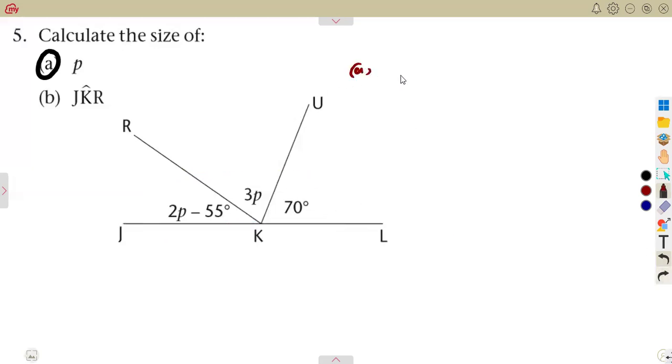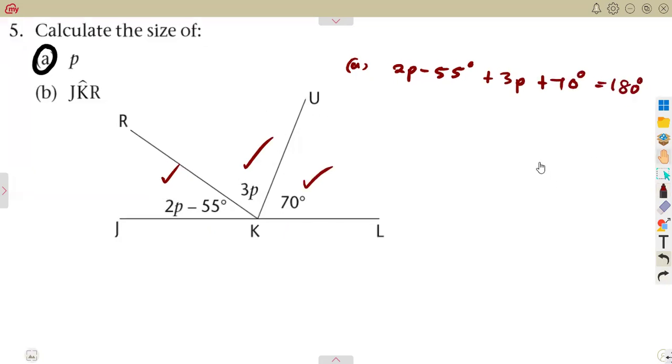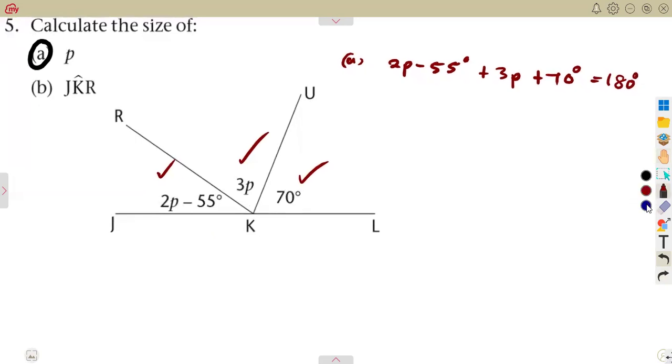That means 2p minus 55 degrees, this angle that we are seeing, and this angle of 3p, and also the angle of 70 degrees, is supposed to be 180 degrees. These are angles on a straight line. You form an equation, then you must solve that equation.